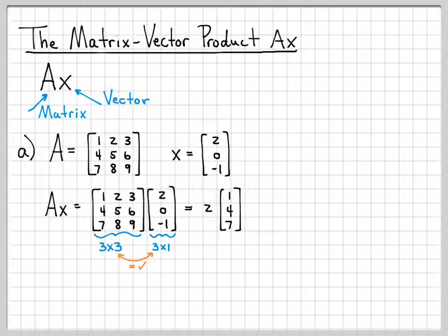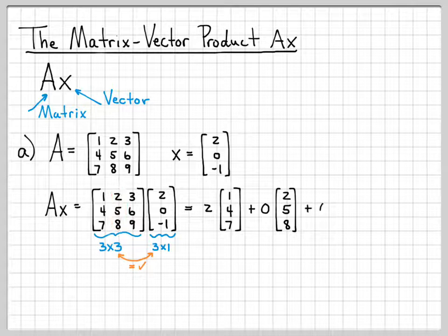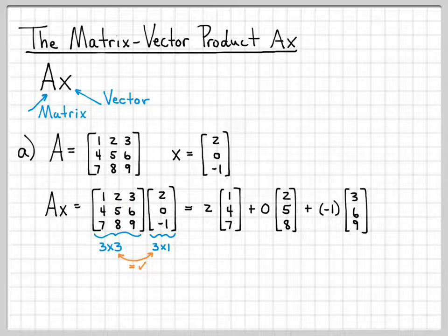I'm going to have the first element of X, which is 2, multiply that by the first column of A, which is 1, 4, 7. Then I'm going to add 0, because that's the second element of X, times this second column of A, plus a negative 1 times the final column of A. So every element of X goes here, multiplying every column of A. That's how we define this matrix-vector product.